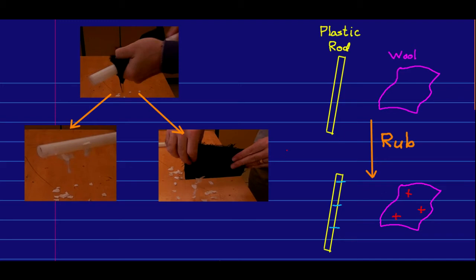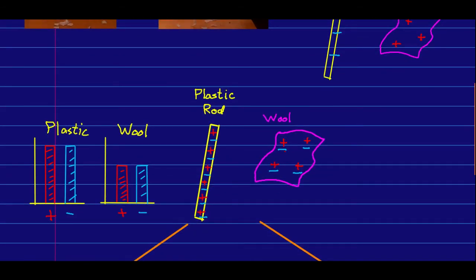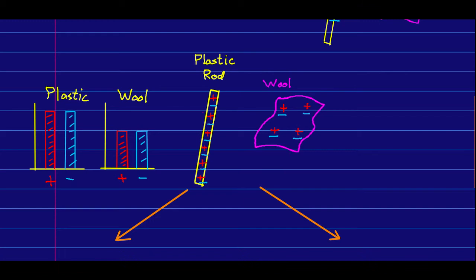However, remember that before they were rubbed, each of them was neutral because it contained equal quantities of positive and negative. And so we would have had a situation like this, where I've drawn equal amounts of positive and negative in each, and here I'm showing bar charts showing quantities of positive and negative charge in each object.